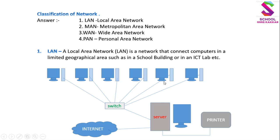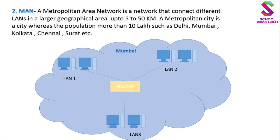जैसा नीचे diagram में दिखाया गया है — तीन, चार, पांच, छे computers हैं, इनको switch के जरिए आपस में जोड़ा गया है। यह switch नेटवर्क पर काम कर रहे PCs को आपस में जोड़ता है और server तथा printer भी इसी से जुड़े हुए हैं। जैसा हम ICT lab में देखते हैं — एक जगह से command देने पर printer निकालता है और सभी computers एक ही नेटवर्क से जुड़े होते हैं।